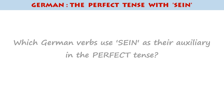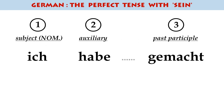You probably already understand that you need three parts: the subject, the auxiliary — which is normally haben for the vast majority of verbs — and then at the very end of the sentence or clause, you have a past participle. In my other video, I go into some detail as to how to form that structure.